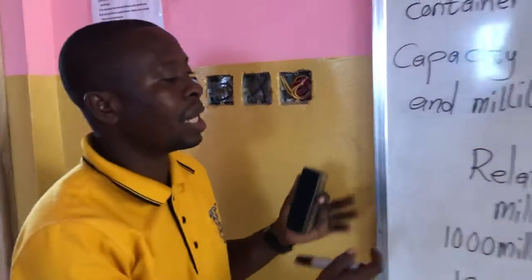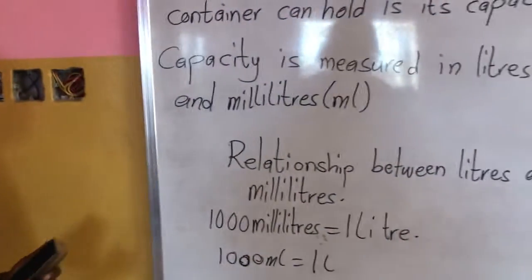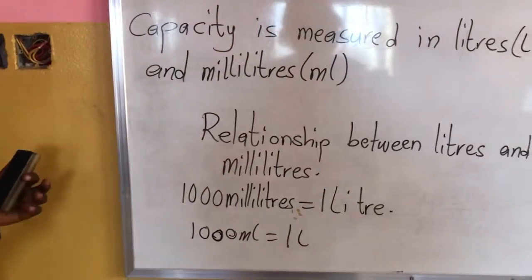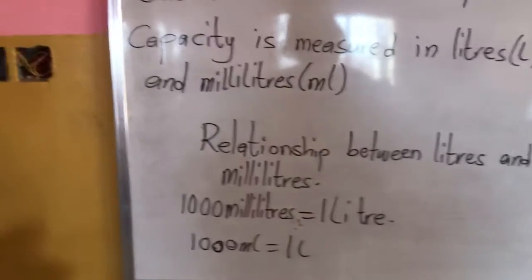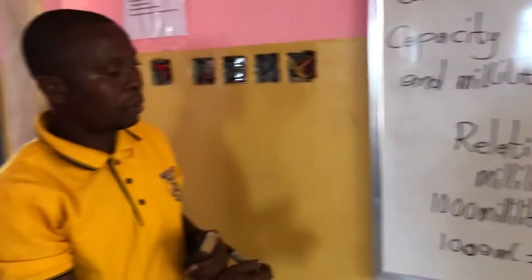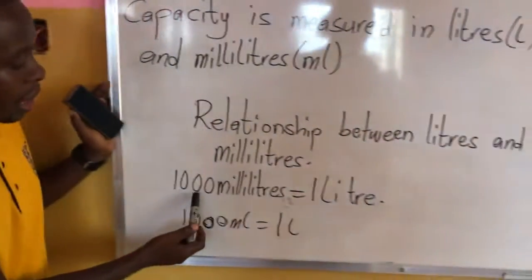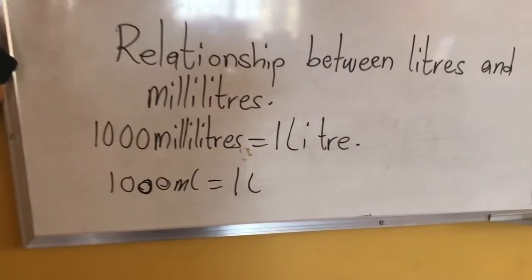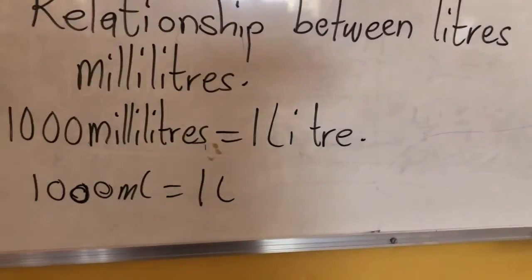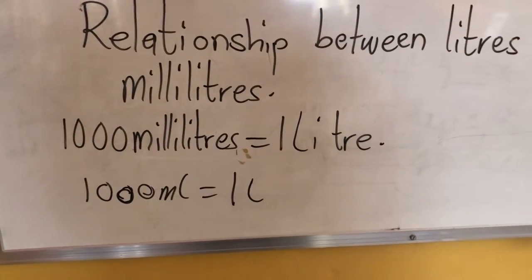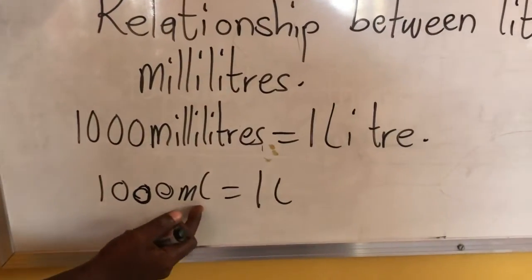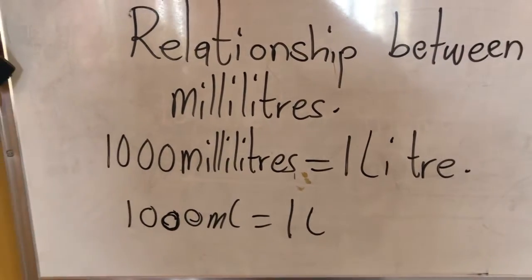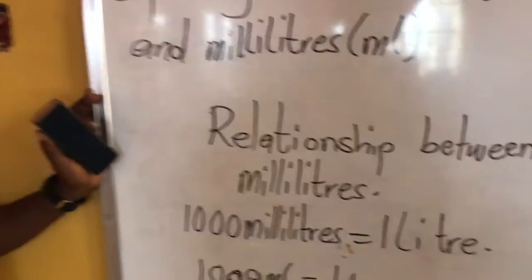Now let's look at the relationship between liters and milliliters. One thousand milliliters will give us one liter — that is, 1000 ml equals 1 L.